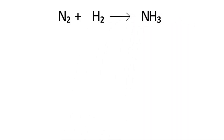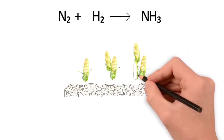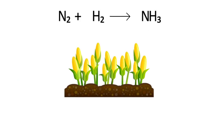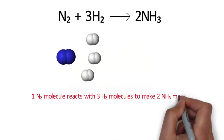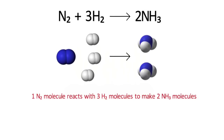Let's look at another example: nitrogen combining with hydrogen to form ammonia — known as the Haber process, used for making fertilizer. The unbalanced equation N₂ + H₂ → NH₃ needs balancing. We put 2 in front of ammonia, then check: hydrogen is not balanced, but nitrogen is. To balance hydrogen, 2 × 3 = 6, so we put 3 in front of hydrogen. The balanced equation gives a mole ratio: one mole of nitrogen reacts with three moles of hydrogen to give two moles of ammonia.